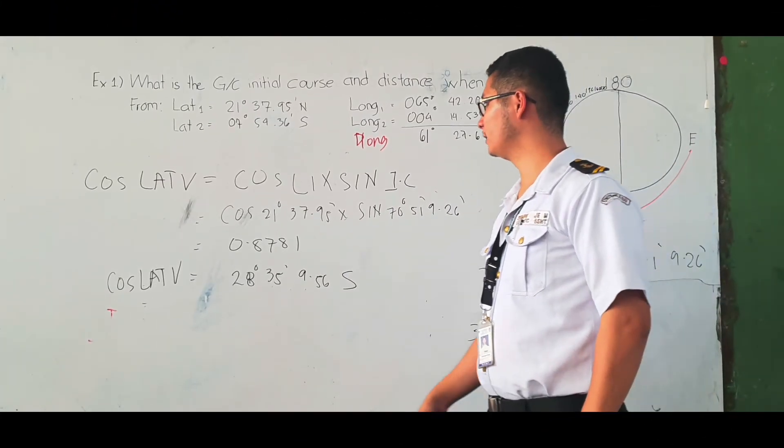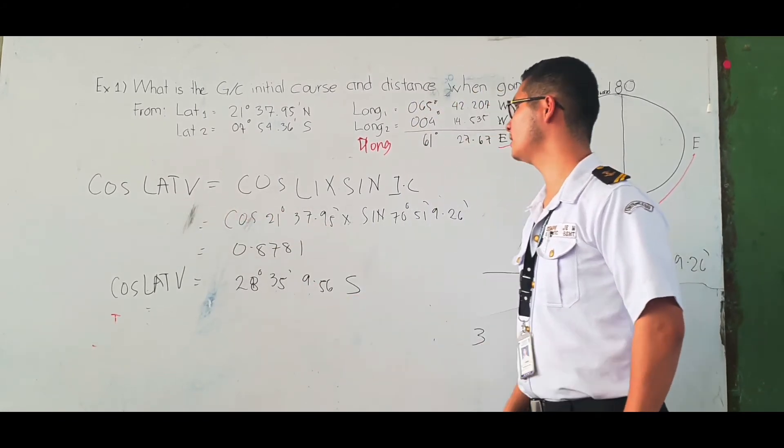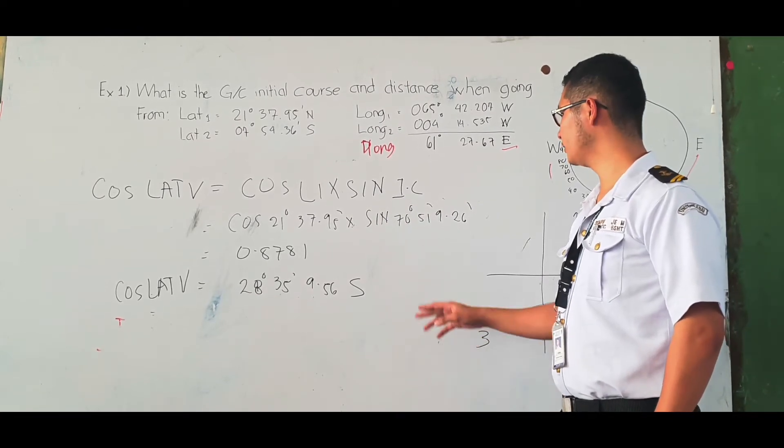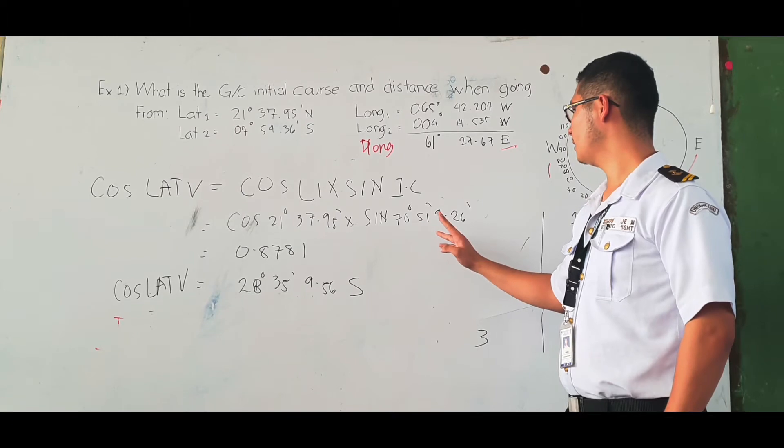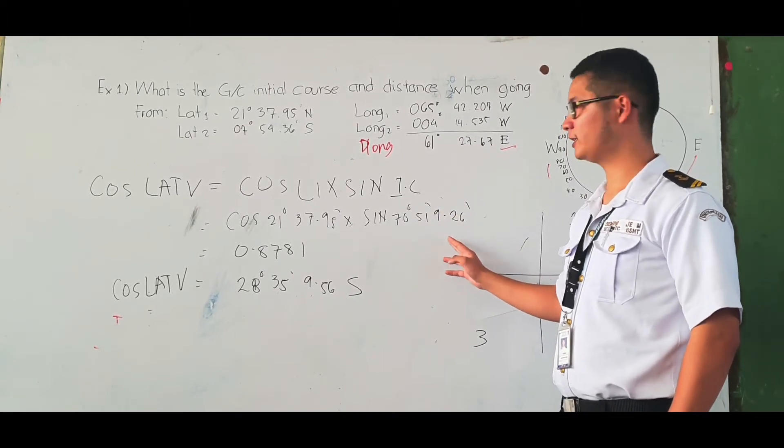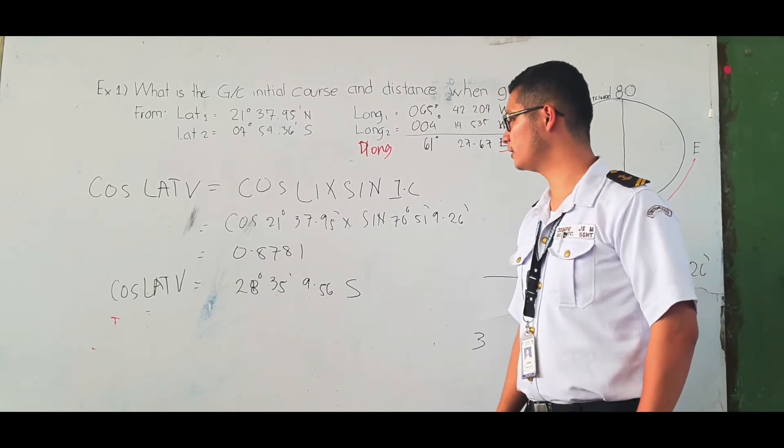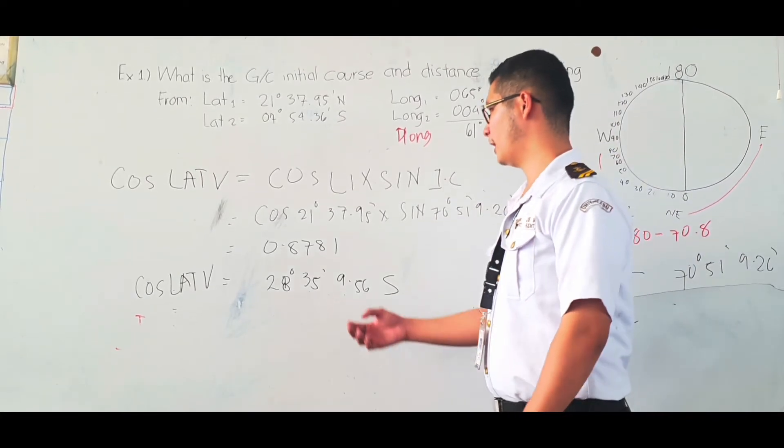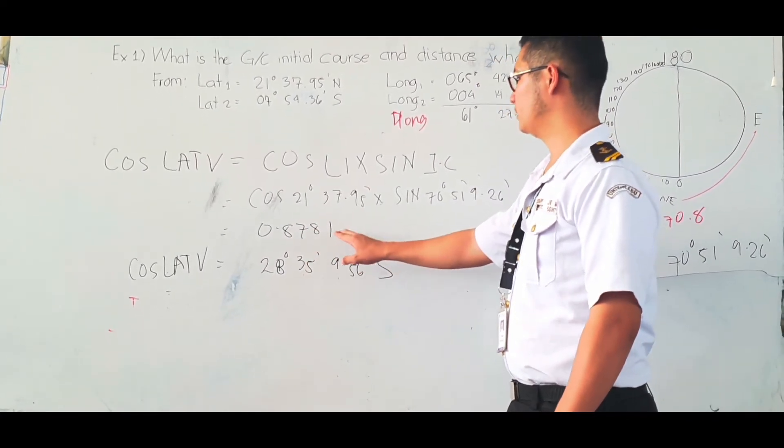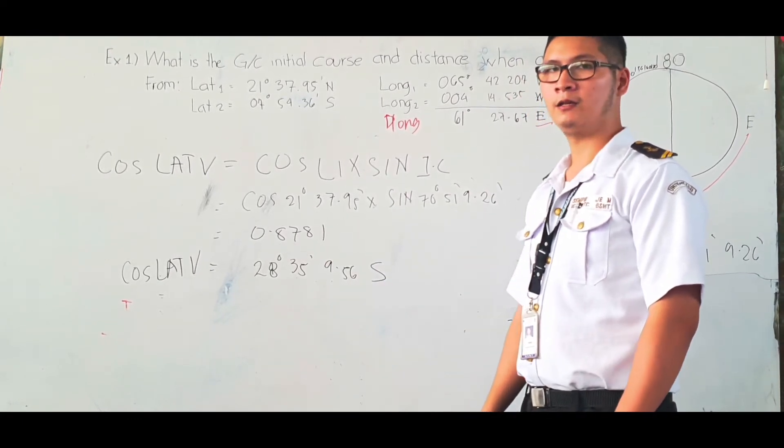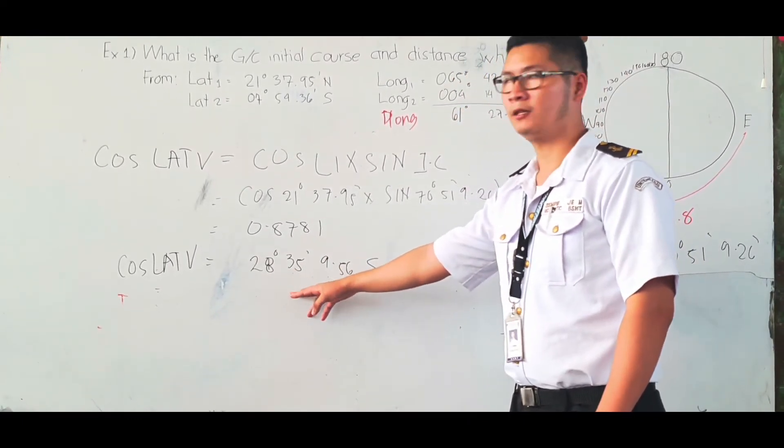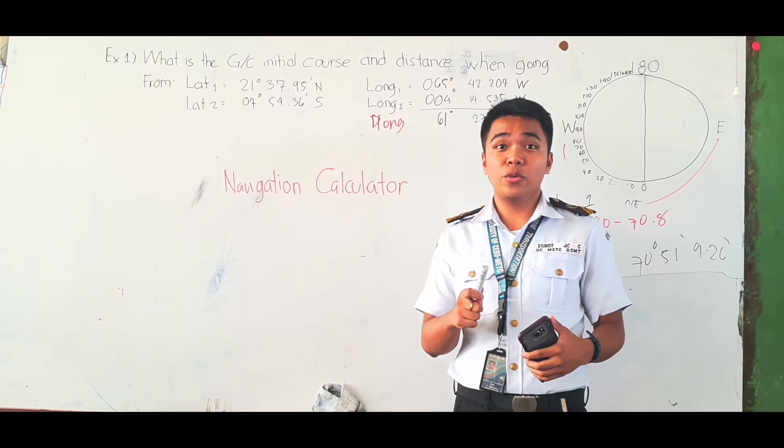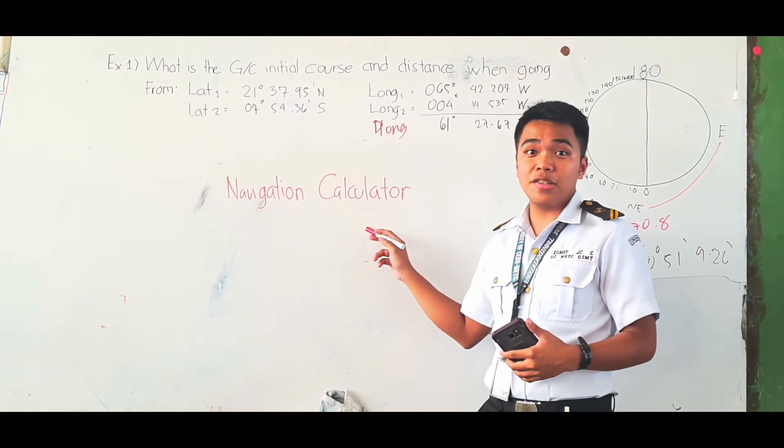The formula is cos L1 times sin initial course. Remember, the initial course is 70 degrees 51 minutes 9.26 seconds. The product is 0.8781. We use shift cos then convert it into degrees. The cos L1 times V is 28 degrees 35 minutes 9.56 seconds. To check our answers, we can use the navigation calculator app to verify if our answers are correct.